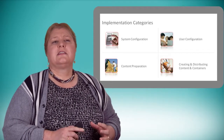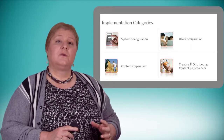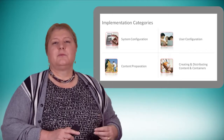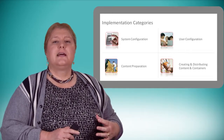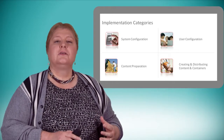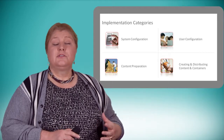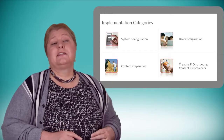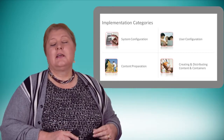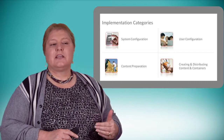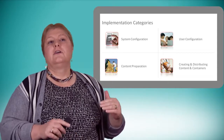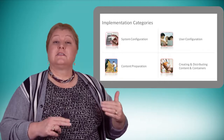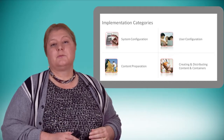Initially we start with the implementation categories, and what you'll see here are four different types of tasks that we put together in the system. We have the basics of system configuration and then user configurations, which give us the baseline on which we can build and put together the content preparation and the creating and distributing of content and containers. We build the baseline as our starting point and then add in all of the different content that we want our users to work with.